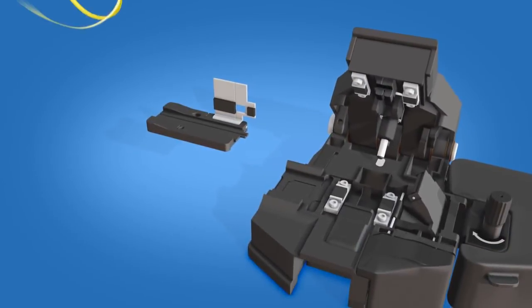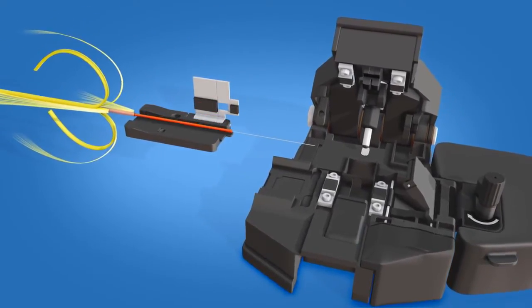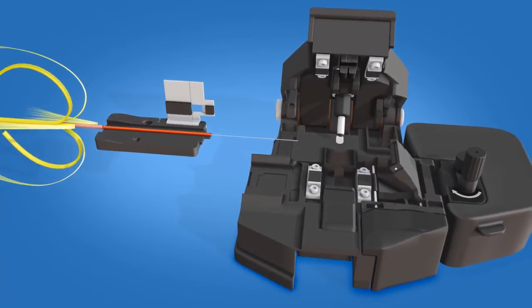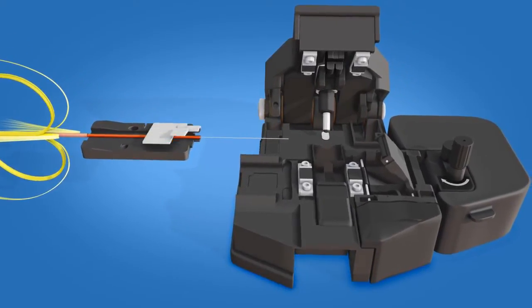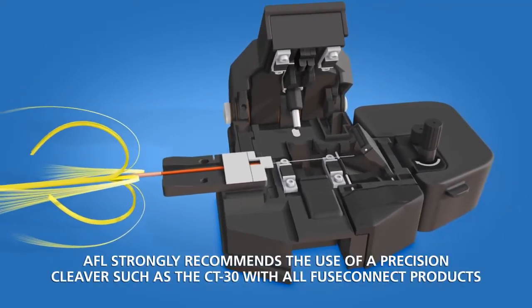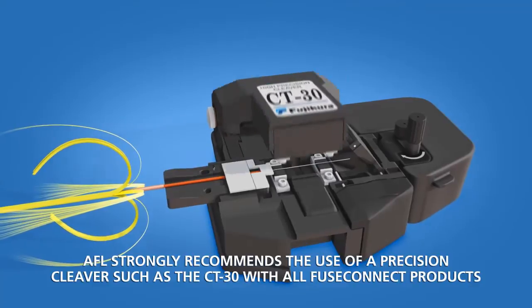Place the fiber into the 900 micron fiber holder with the end of the 900 micron coating at the end of the fiber holder. Close the fiber holder clamp. Load the fiber holder into a precision cleaver and cleave the fiber.